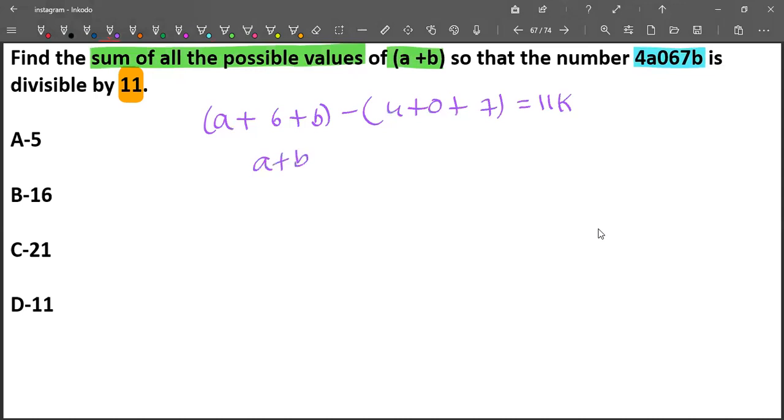So a+b, we have 4+7 is 11, and 6-11 is -5. Therefore a+b = 11k+5.